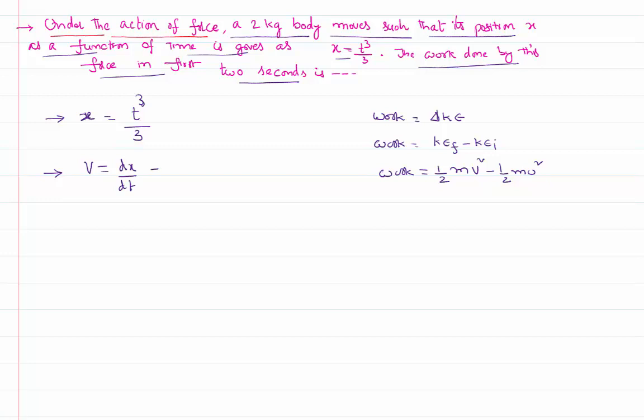So I have to just differentiate this equation d by dt of t cube by 3. 3 is a constant, I can write it outside the differentiation: 1 by 3 d by dt of t cube. You know there is a formula for differentiation. Differentiation of x power n is equal to n into x power n minus 1.